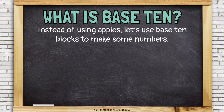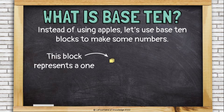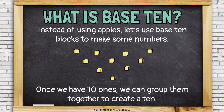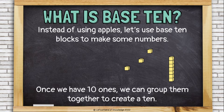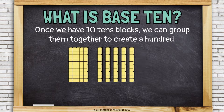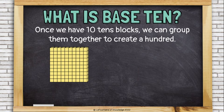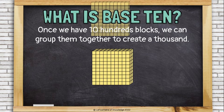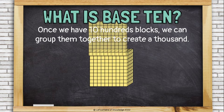Instead of using apples, let's use base 10 blocks to make some numbers. This block represents a one. Once we have 10 ones, we can group them together to create a 10. Once we have 10 tens blocks, we can group them together to create a 100. Once we have 10 hundreds blocks, we can group them together to create a 1,000.